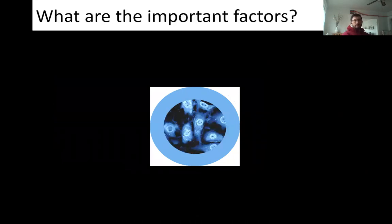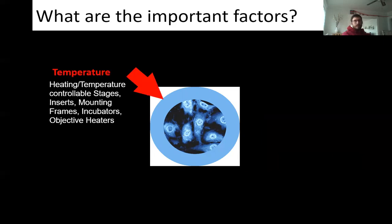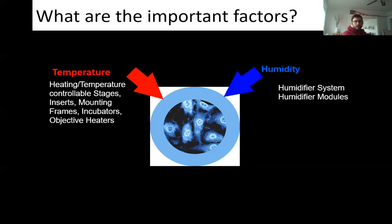I want to talk about live cell imaging today. There's obviously a lot more to consider — we have to make sure that your sample is alive and happy while it's on the microscope. I want to go through a few things: temperature, since many things we look at don't live at room temperature, especially in the HCBI which is usually very cold. Biological things also do not like to dry out, so this usually means keeping them in a humid environment.